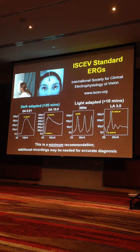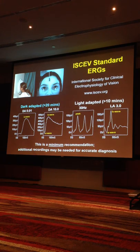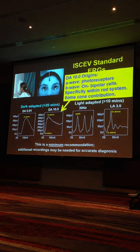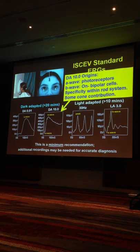If we just review the basic international standard recommendations for ERGs, we have four basic responses. A dim flash in a dark-adapted eye — these numbers refer to the brightness of the flash, so 0.01 is dim and 10 is bright. The rod-specific ERG, the DA0.01, arises in the on-bipolar cells, so it gives sensitivity within the rod system but no specificity. The bright flash dark-adapted ERG is what most people would draw if asked to identify an ERG. We have an A-wave from the photoreceptors and a B-wave from the inner retina, from the on-bipolar cells — this gives specificity within the rod system.